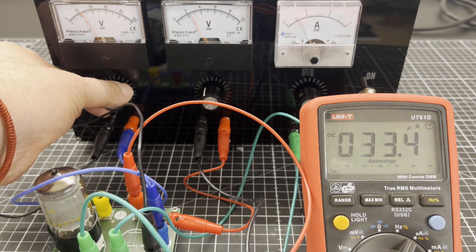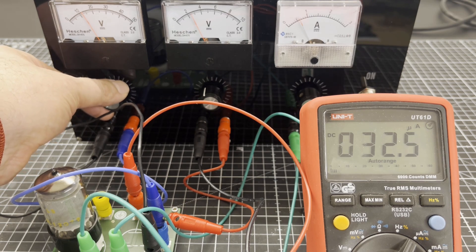Here you can see the typical current drop for the Frank-Hertz experiment with increasing acceleration voltage.